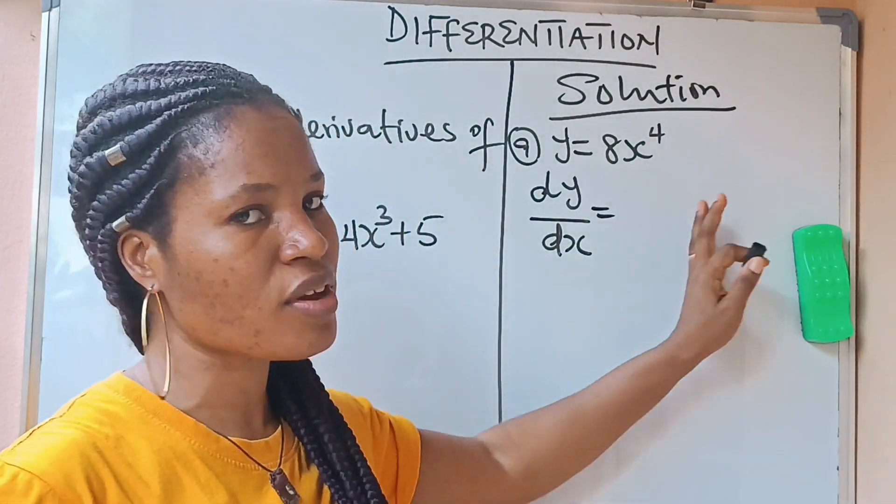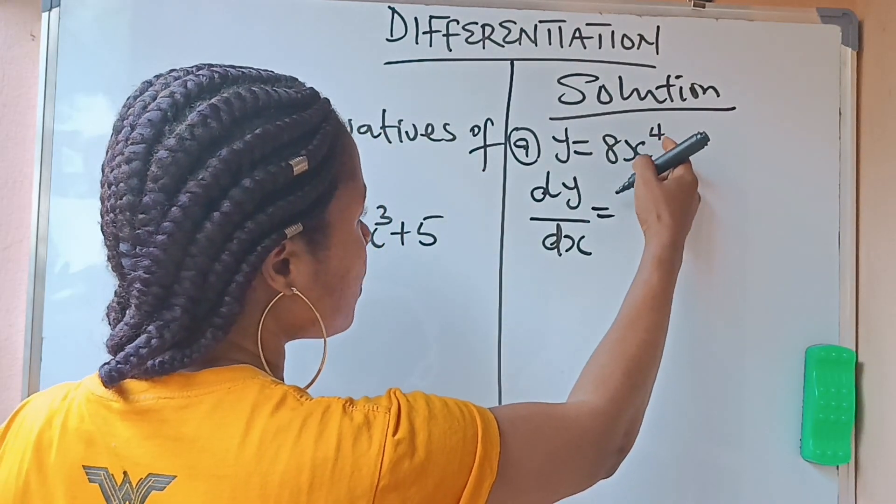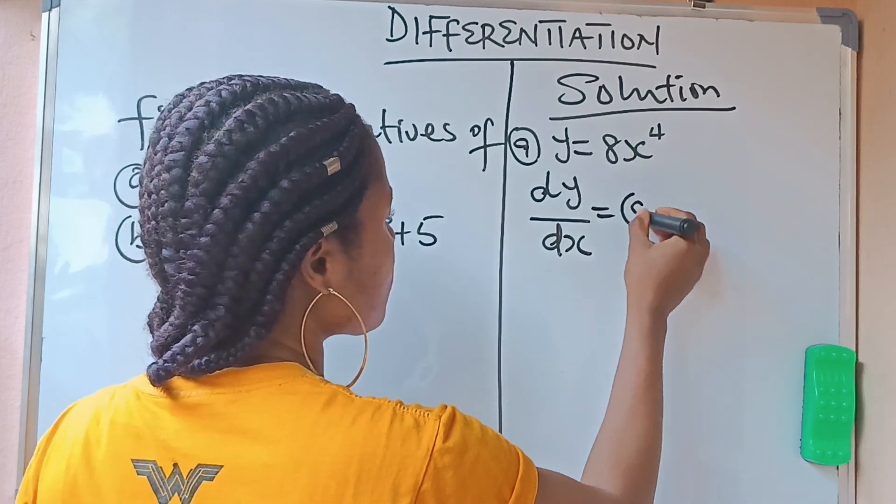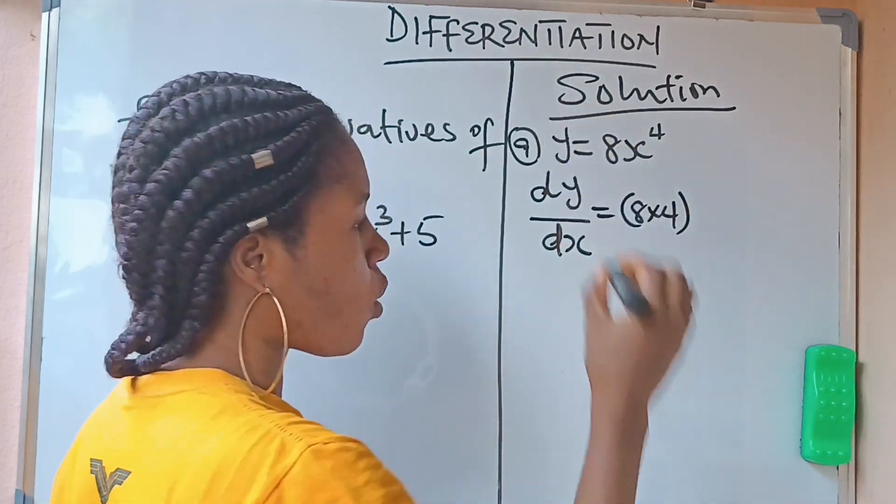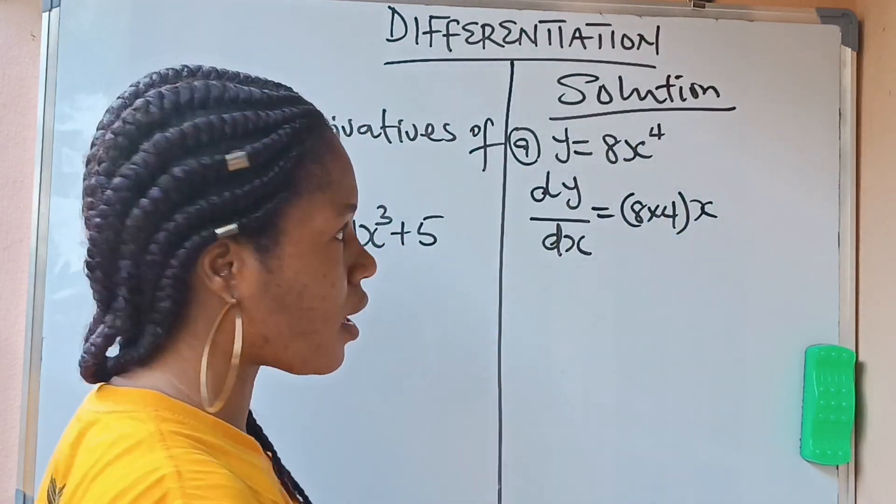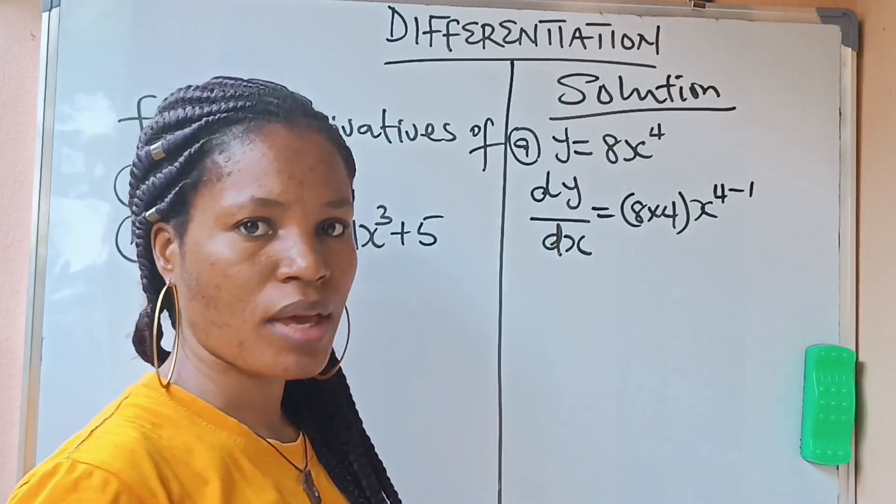Now, this is equal to, this is very easy. It's very easy because all you need to do is 4, that is the power of your x, 4 times 8. So you are going to have 8 times 4 here. Then write your x for them, write your x for them again. Then this 4 you have here, subtract 1 from 8.